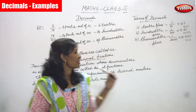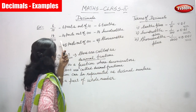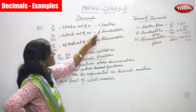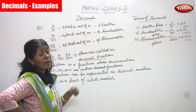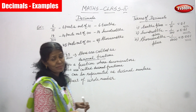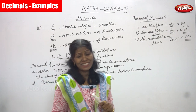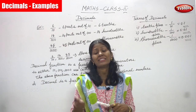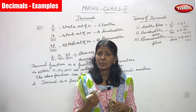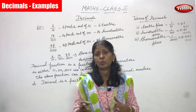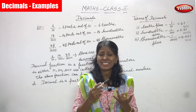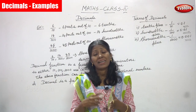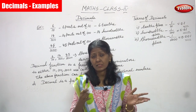Example: 6 by 10. 6 parts out of 10 is equal to 6 tens. While you are using the terms in decimals — tens, hundreds, and thousands. You know that place value: ones, tens, hundreds, thousands, ten thousand and lakhs, ten lakhs.